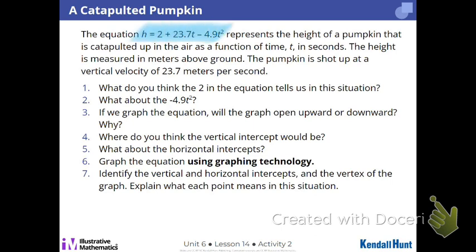Your job is to say, what does the two mean in context? What's up with that negative 4.9t squared? If we graph it, will it open up or down? Where do you think the vertical intercept would be? What about the horizontal intercepts? I'll handle the decimal stuff, so you're going to stop after five. Okay? Let's go.